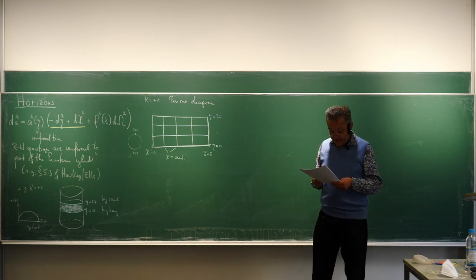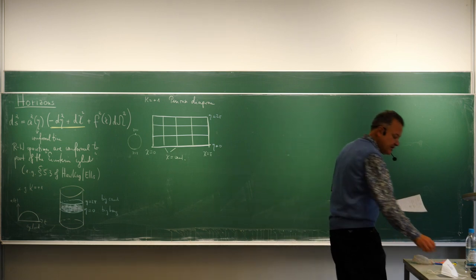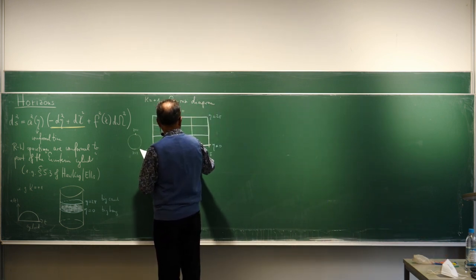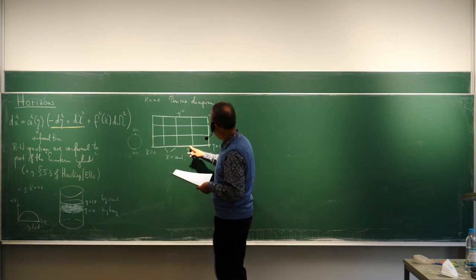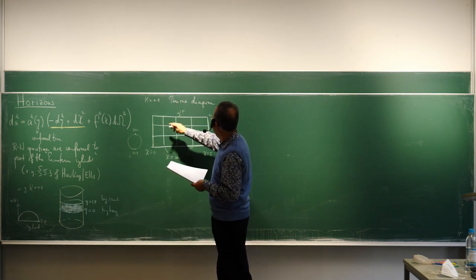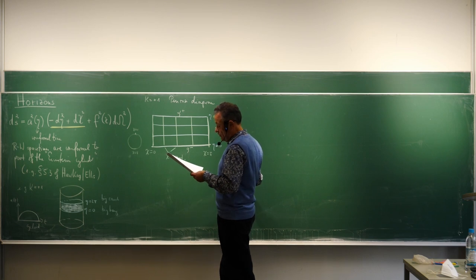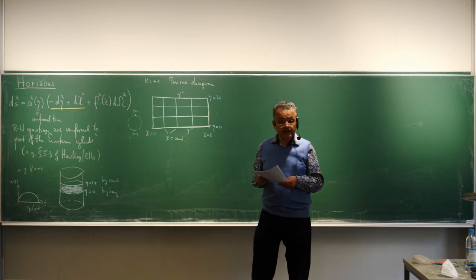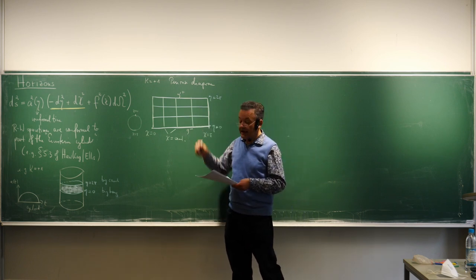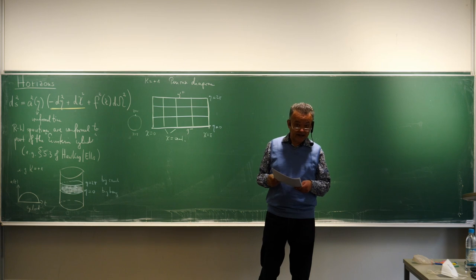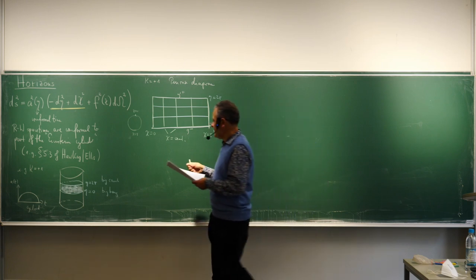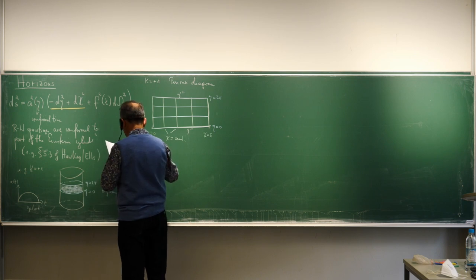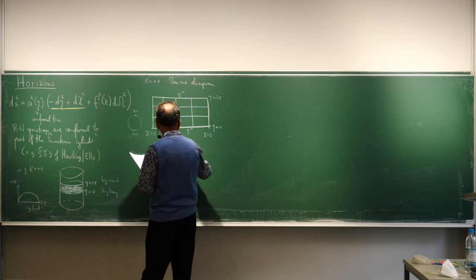The big bang and big crunch here are real singularities. We call the top boundary scri-plus and the bottom scri-minus. Scri-minus is where light rays originated and scri-plus is where light rays terminated, and both are space-like. For the open and flat cases, k equals zero or minus one, scri-plus is no longer space-like but is light-like or null-like.